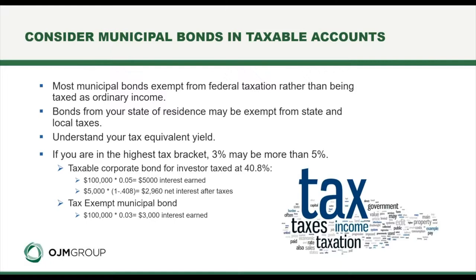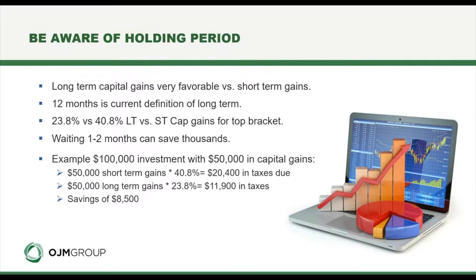If you take note of this formula, you can run the math for an analysis of municipal versus taxable bonds and determine what your break-even point may be. Be aware of your holding period — long-term capital gains are obviously very favorable relative to short-term capital gains. Today's tax law defines long-term as 12 months. Referencing the 23.8% versus 40.8% rates — if you wait an extra month or two, it can end up saving you thousands of dollars.